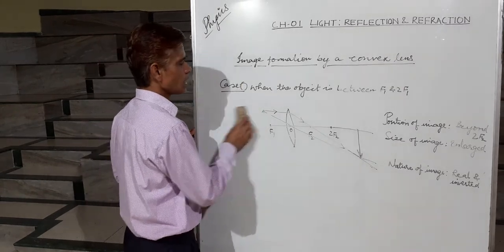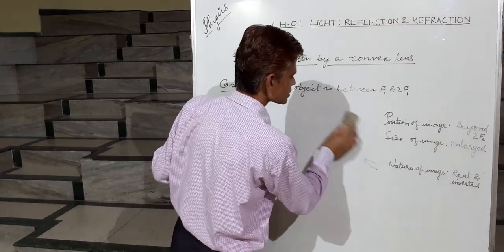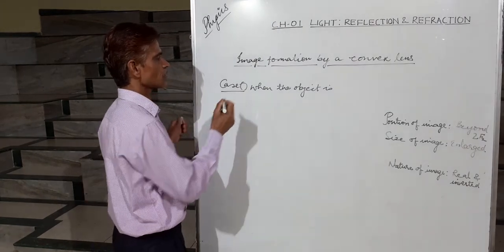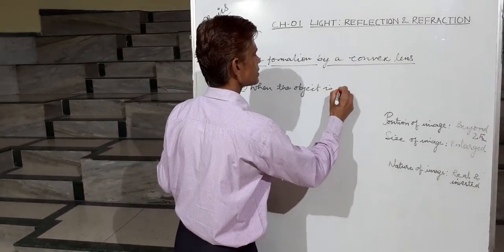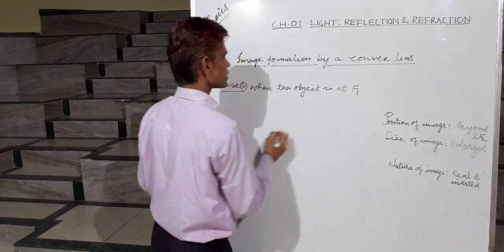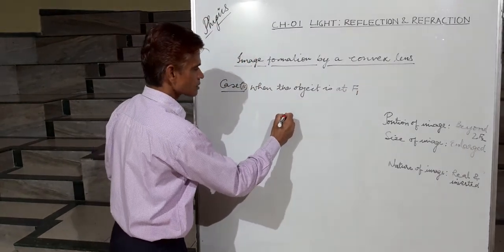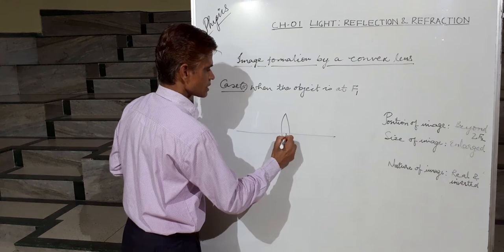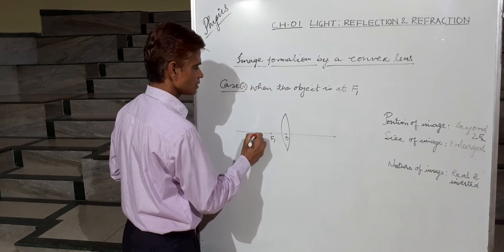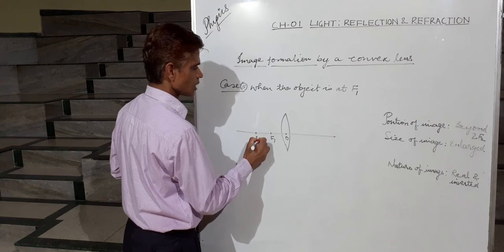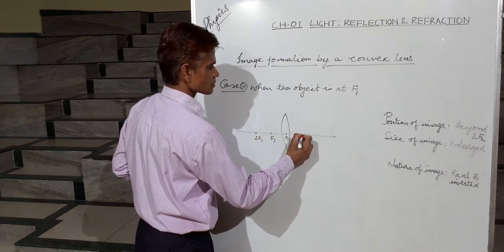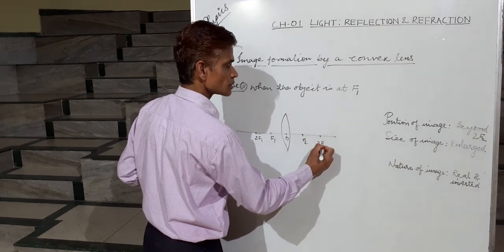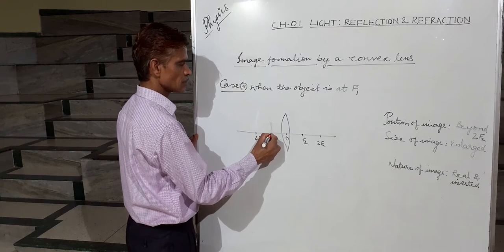Now case number 5: where the object is at F1 itself, that is at the focus. Let us draw the diagram showing the optical center, F1, 2F1, F2, and 2F2. The object is placed at the focus F1.